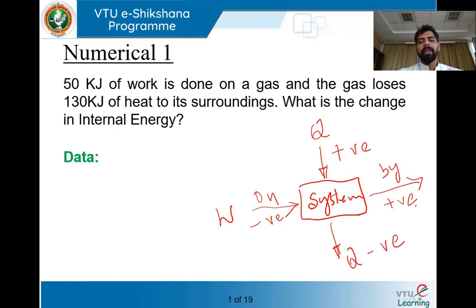Bear this in mind — this convention is used while solving numericals. Work done on the system is negative, work done by the system is positive, heat added to the system is positive, and heat rejected by the system is negative.